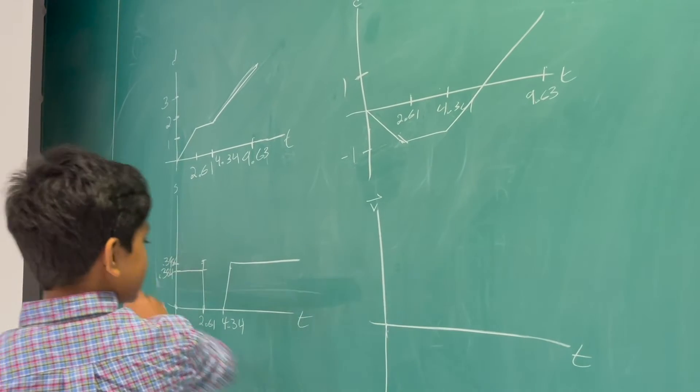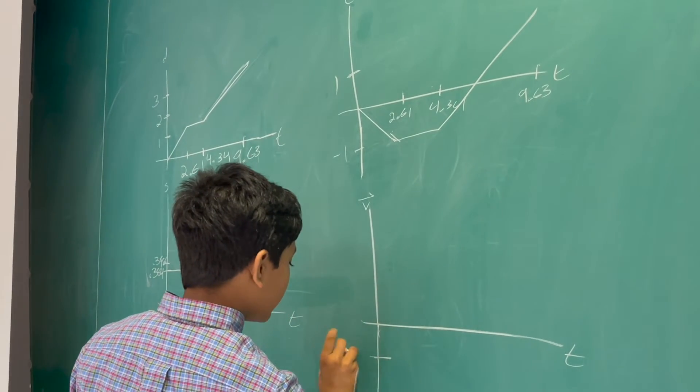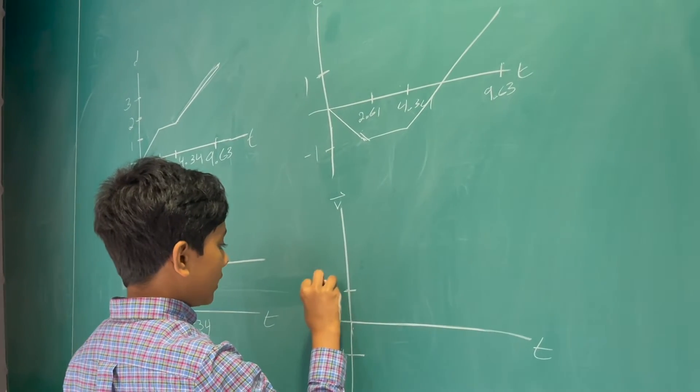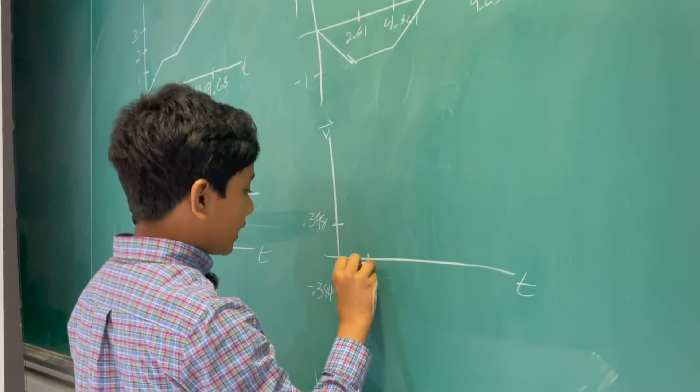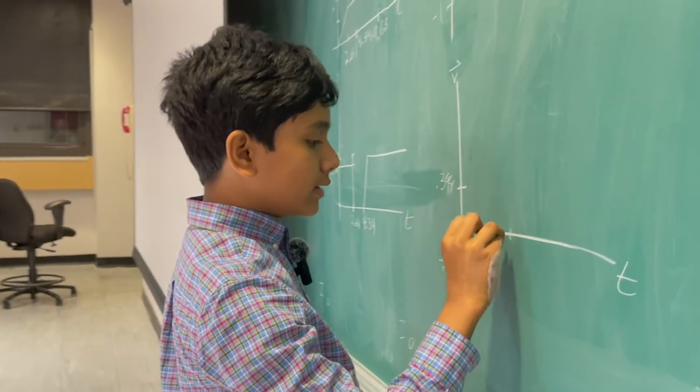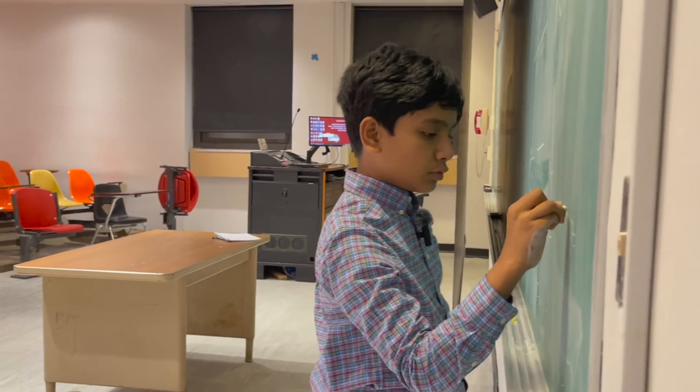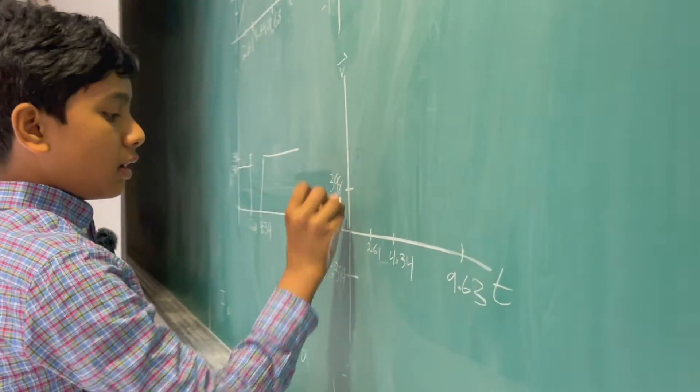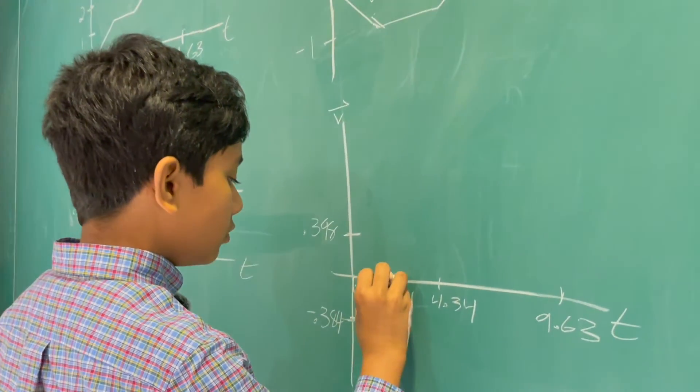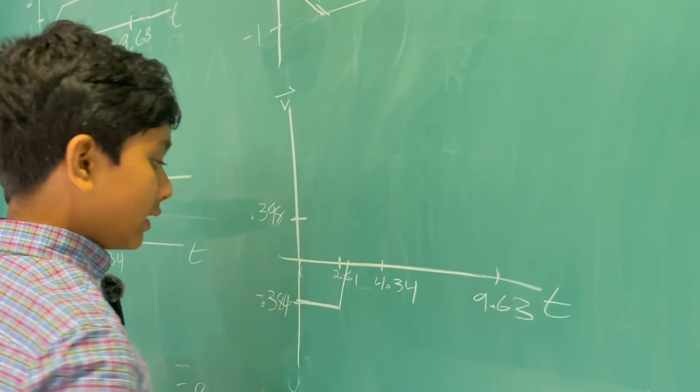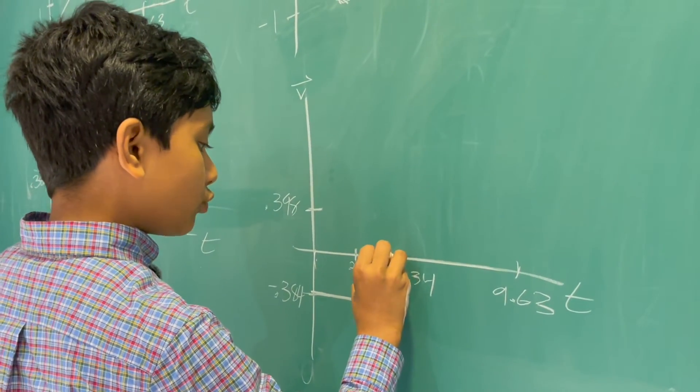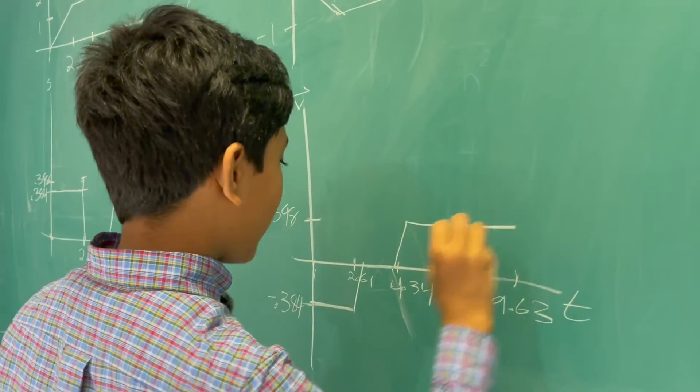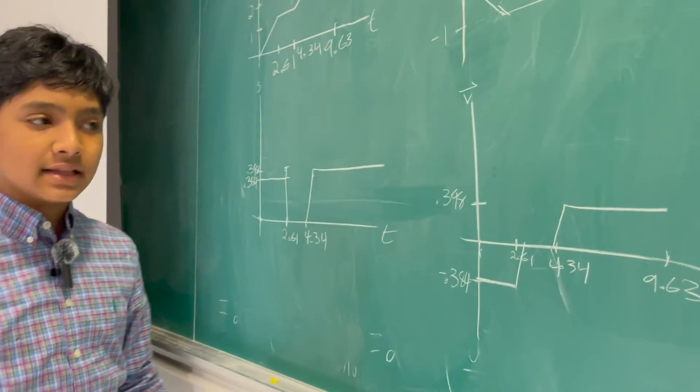And finally, for our velocity over time, it's essentially the same as this, but the 0.384 is negated. So, 0.398. And then, once again, you have to factor in the downtime. So, 4.34, 9.63. So, now, here, we write down minus 0.384. It really quickly goes down to 0. Then, it really quickly goes back up again this way and stays there for the remainder of the time.